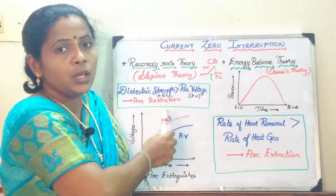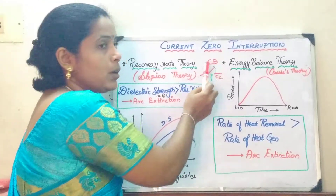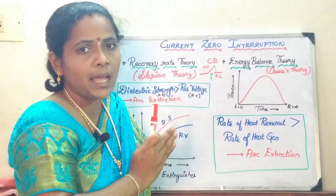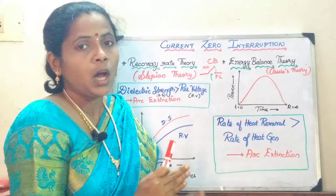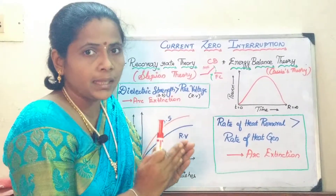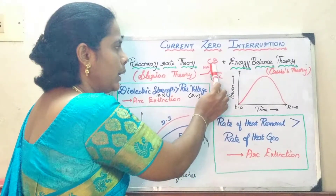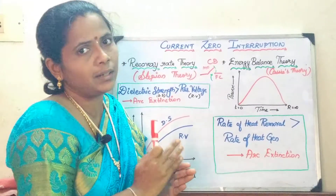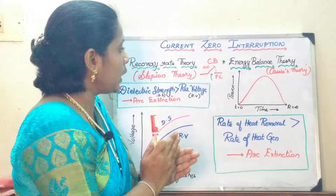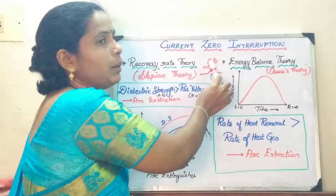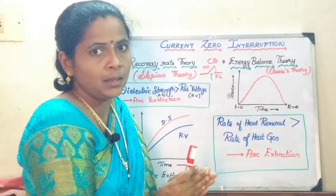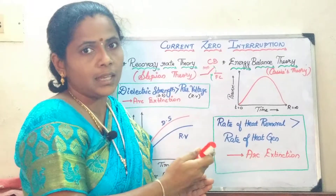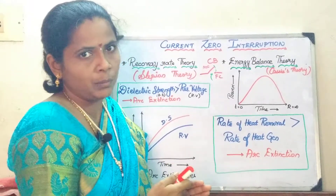In the Slepian theory, whenever you have arcing — whenever the contacts are open — the main criteria is that the arc has to be interrupted as soon as possible. Whenever arcing occurs, you apply a cooling medium to quench the arc, and it should be done as soon as possible to avoid damage. What we do is remove the ionized particles from the arc path, so that the resistance of the arc gets built up — that is, the dielectric strength gets built up — and the arc will get extinguished as soon as possible.